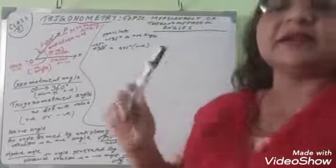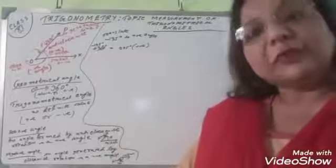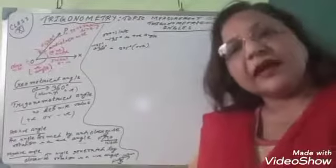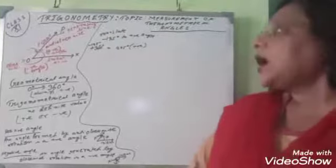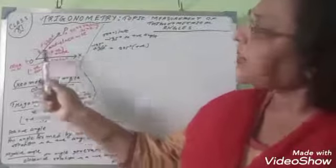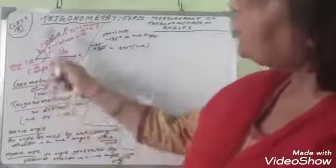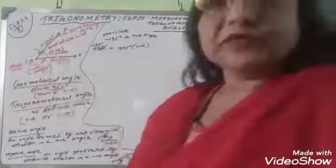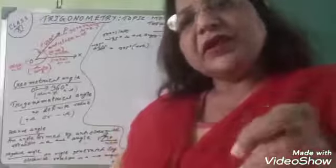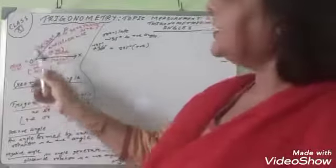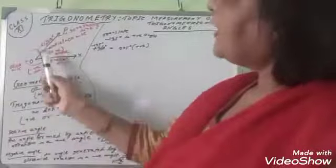Before starting trigonometrical angles, let me say something about geometrical angles — what is the difference between a geometrical angle and a trigonometrical angle. When two lines, say OX and OP, meet at one point, in normal geometry we say that at that particular point one angle is formed.